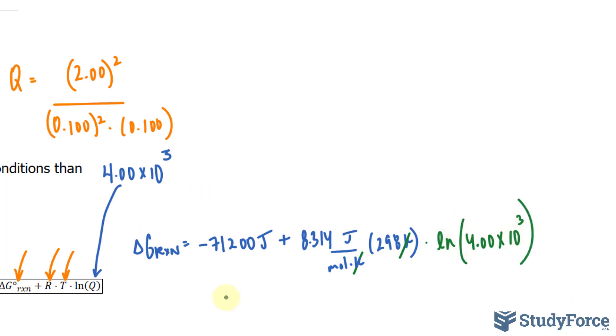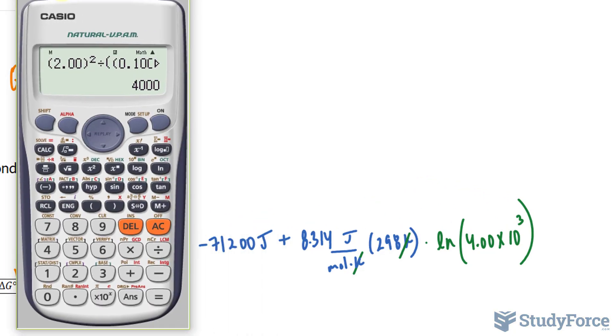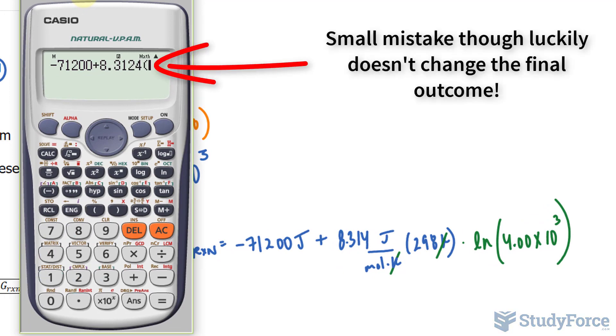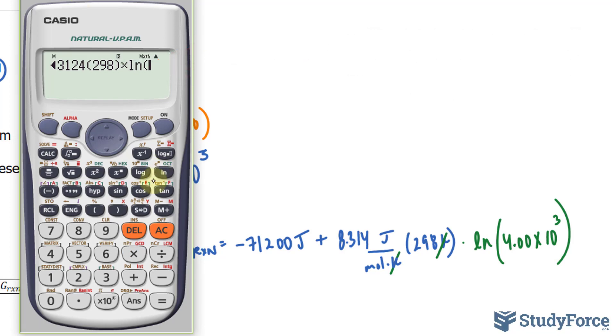And now we can calculate delta G under these brand new conditions. Negative 71,200 plus 8.314 times 298 times the natural logarithm of 4,000.